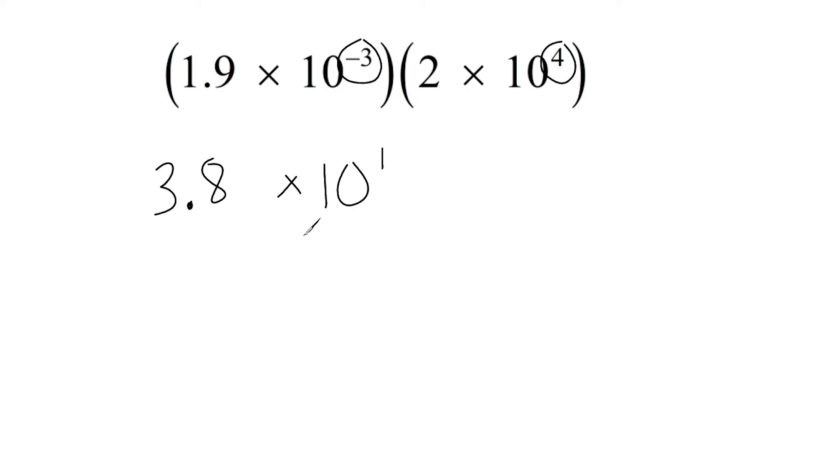And this is actually in scientific notation. However, we should understand that normally when our exponent is a 1, that we do not write it. So we can just write 3.8 times 10 with no exponent written. Now, just because it's blank does not mean that it's zero, because if it were 10 to the zero power, that would actually equal 1. So if there is no exponent written, we should always understand that there is actually a 1 there. So 3.8 times 10 is our final answer.